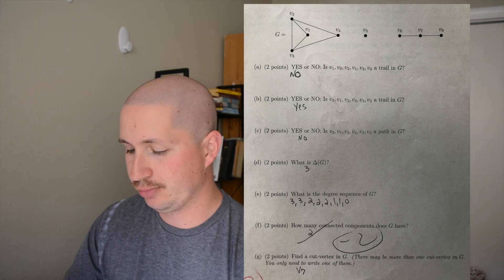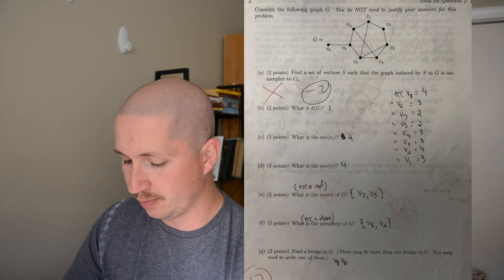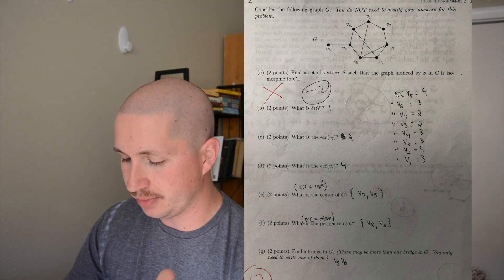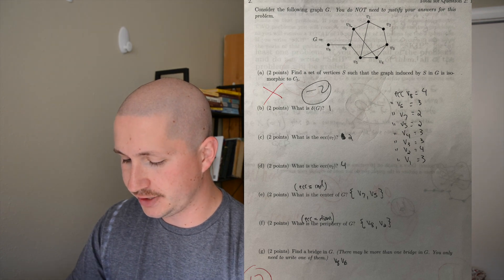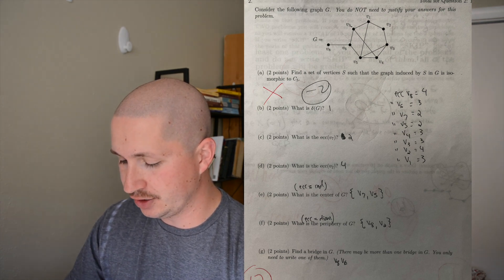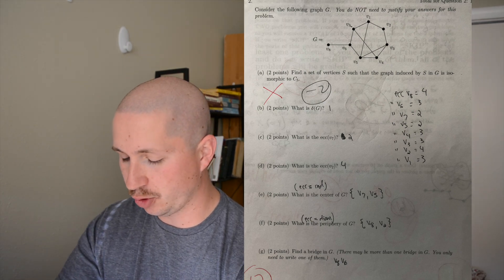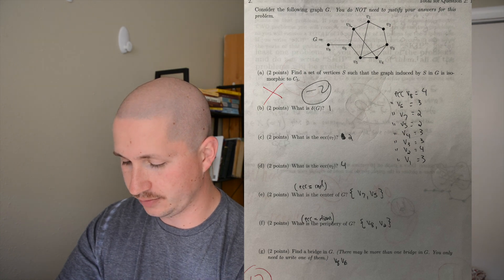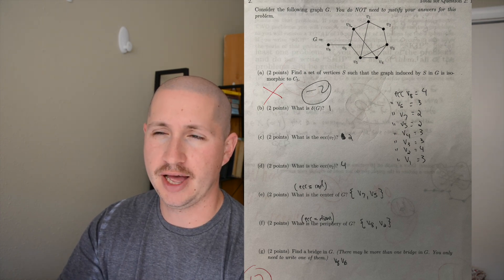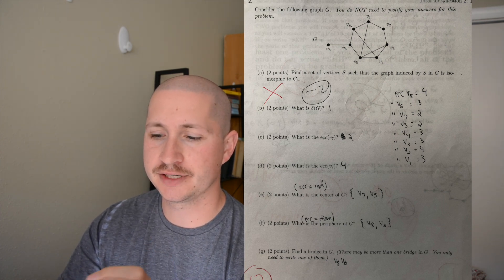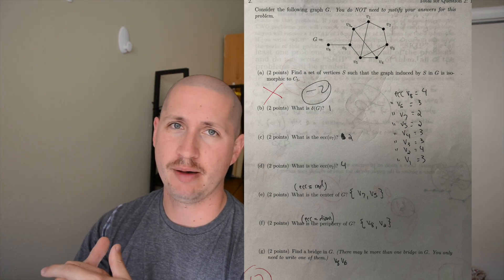This next page has a little bit more to it. There's some definition as well, but it's a lot easier to get tripped up on ones like these. Part A: find a set of vertices such that the graph induced by S and G is also isomorphic. So I had to find an isomorphic graph to G, which is shown above. That's a little bit more difficult because finding isomorphisms of graphs, there's not an algorithm for that. I believe that's an NP problem.